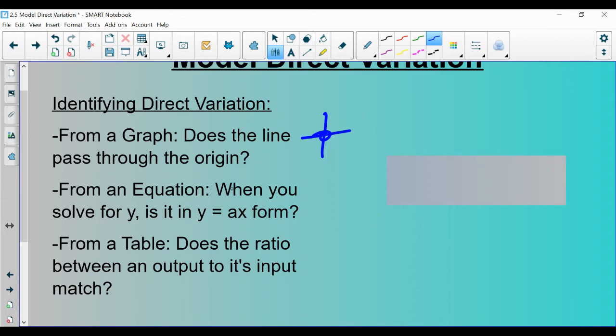From an equation, how you can identify if it is direct variation is to solve for y. If it looks like this, which is what we said direct variation is, then it would be in fact direct variation. So if when you solve for y it looks like y equals some number and then x, it's direct variation.